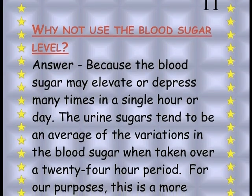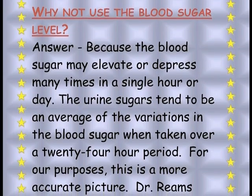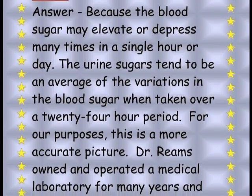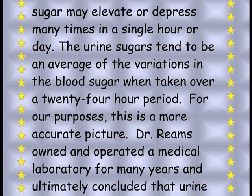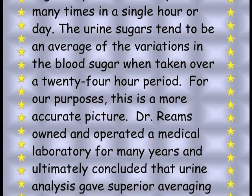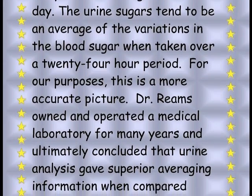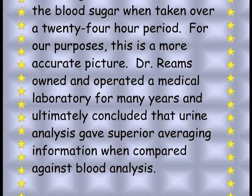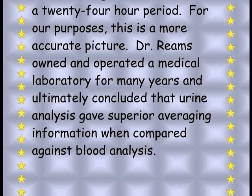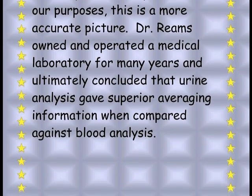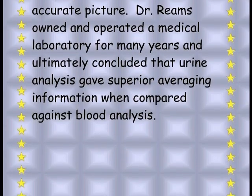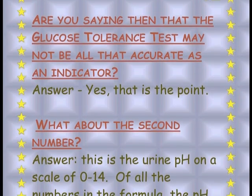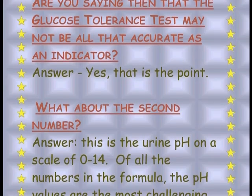Why not use blood sugar level? Because blood sugar may elevate or depress many times in a single hour or day. The urine sugars tend to be an average of the variations in blood sugar when taken over a 24-hour period, making it a more accurate picture for our purposes. Dr. Reams owned and operated a medical laboratory for many years and ultimately concluded that urine analysis gave superior averaging information compared against blood analysis. Are you saying the glucose tolerance test may not be all that accurate as an indicator? Yes, that is our point.